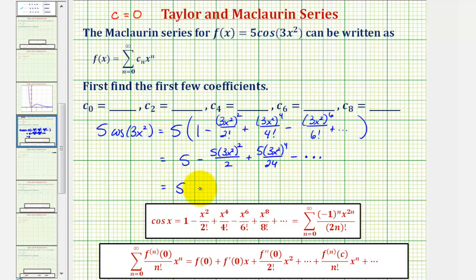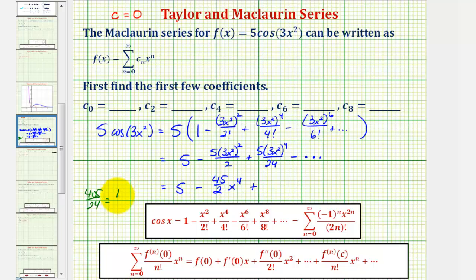So we'd have five minus — this would be five times nine x to the fourth divided by two, which is 45/2 times x to the fourth, plus here we have five times (3x²) to the fourth, that'd be five times 81, that's 405, divided by 24. Well, 405 divided by 24 — a common factor of three — simplifies to 135 divided by eight. So we have plus (135/8) x to the eighth, and so on.